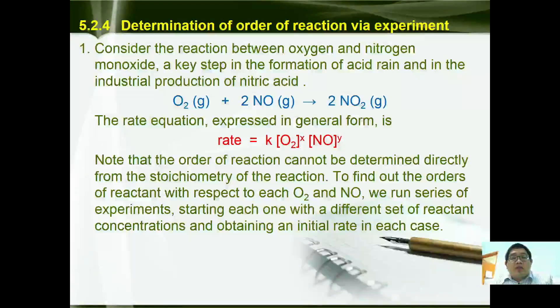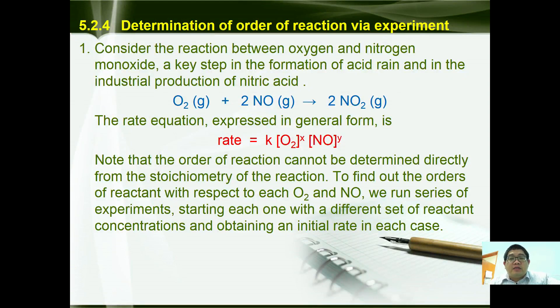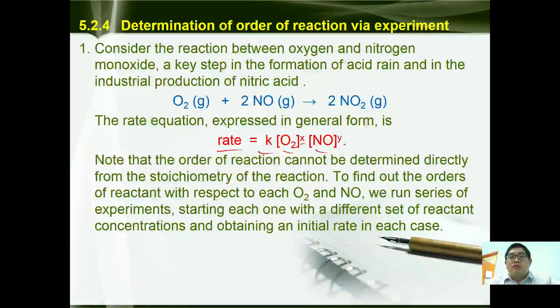Now let's consider the chemical reaction between oxygen and nitrogen monoxide, a key step in the formation of acid rain in the industrial production of nitric acid. So O₂ + 2NO gives 2NO₂. The rate equation is expressed in the general form as rate = k[O₂]ˣ[NO]ʸ.